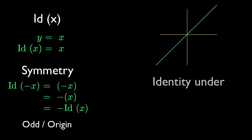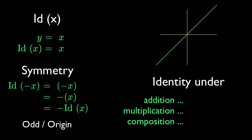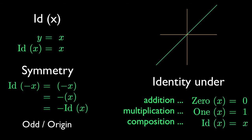There are three kinds of identity functions lurking about here, and it's important not to confuse them. Identities are always relative to an operation. A function can be an identity under addition or subtraction, multiplication or division, or composition. The identity under addition is the zero function — its graph is the x-axis where y equals zero. Add it to a function and the function remains identical. The identity under multiplication is the one function — multiply by a function and the function remains identical. But this id function, arguably the most important, is the identity under function composition.